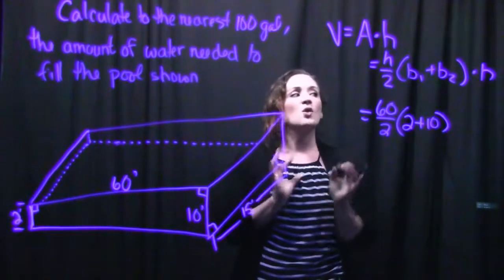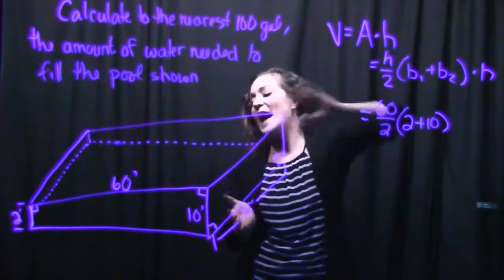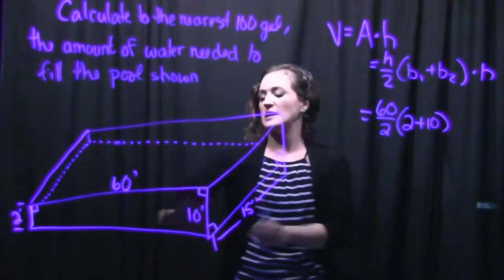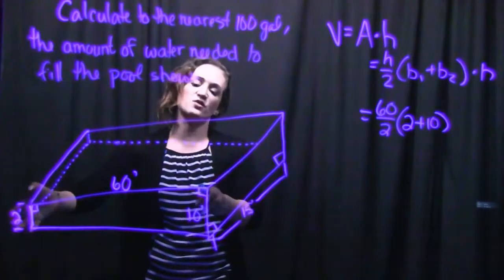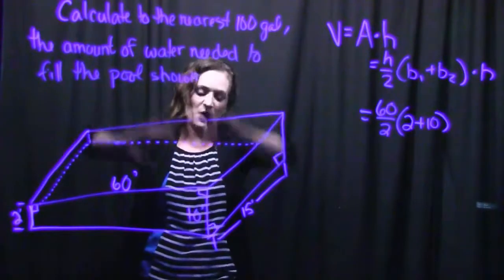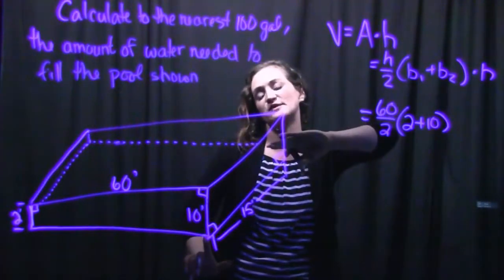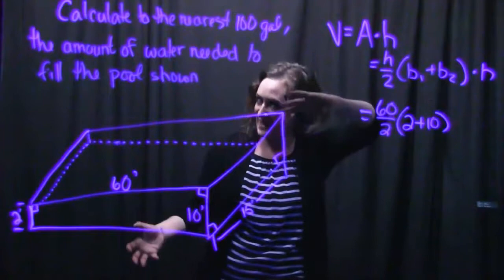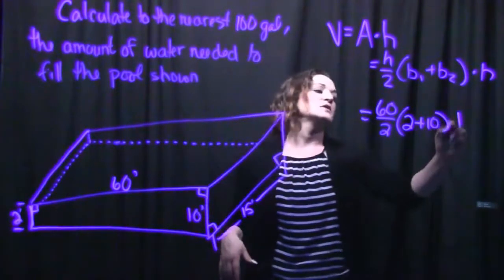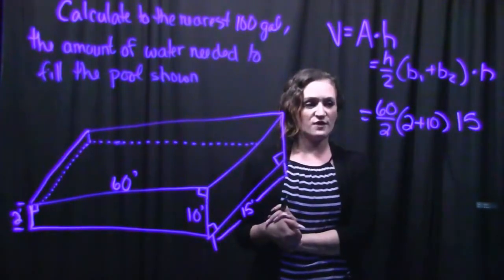And then we're going to go ahead and multiply this by the height of this prism. So again, if we're picturing our bases being these sides over here, its height would actually go out that way. Its height would actually be this 15 right here, kind of its length from our perspective over here. So we would then take that times 15.